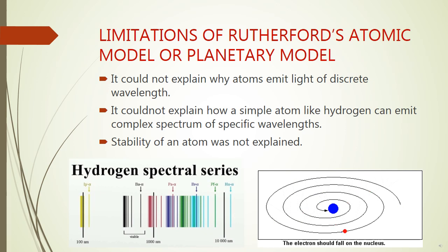Third, when an electron moves, it radiates and loses its energy. Therefore, an electron should fall into the nucleus, which does not happen. Hence, the stability of an atom was not explained by Rutherford's model.